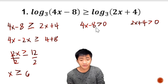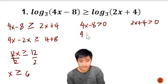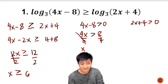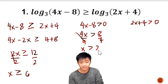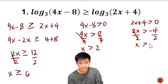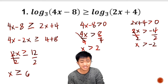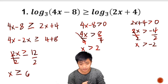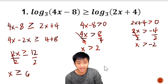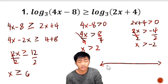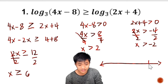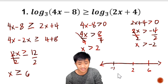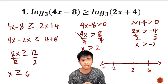After setting the arguments greater than 0, we solve for x. We get x greater than 2, and for the other argument, x greater than negative 2. We are looking for the values of x that make the inequality true, so we draw a number line and mark the numbers 6, 2, and negative 2 on it.